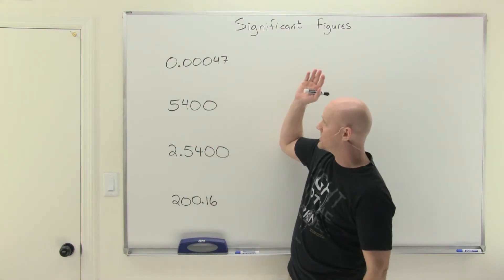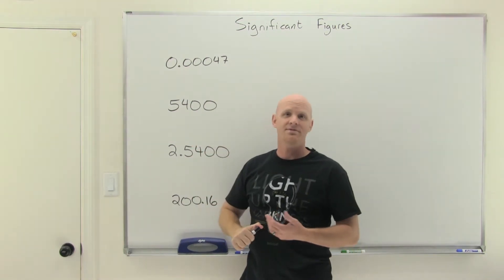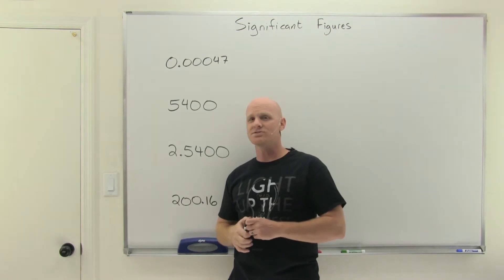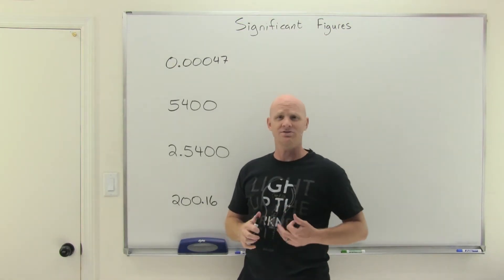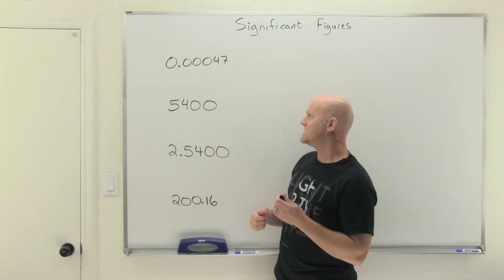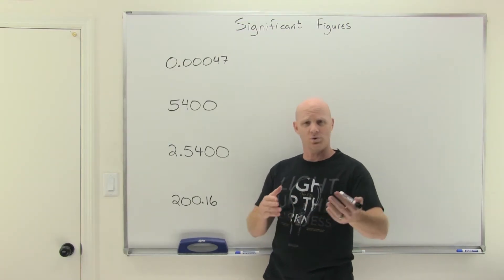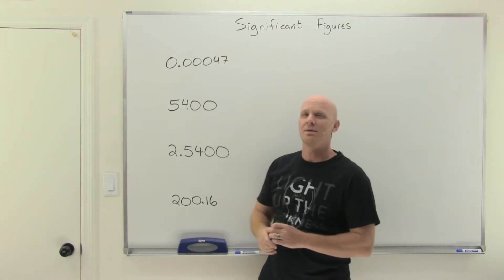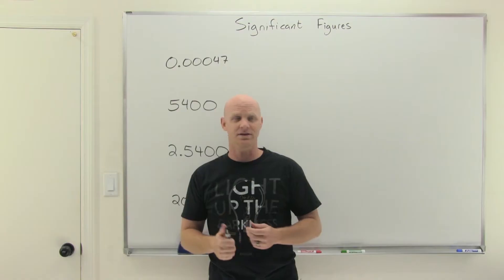Significant figures — for those that aren't familiar, figuring out the number of significant figures in a number is a little bit challenging. It all comes down to the pesky zeros. Sometimes zeros are significant and sometimes they're not. We've got four rules and we're going to go through those four rules with four different examples. But before we get there, we've got to talk about why we even discuss significant figures.